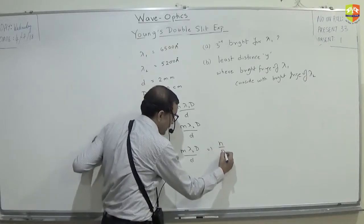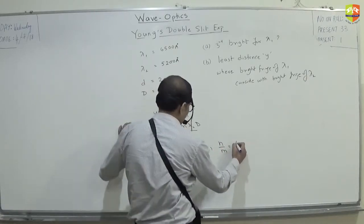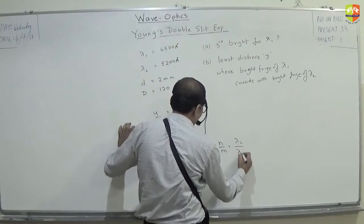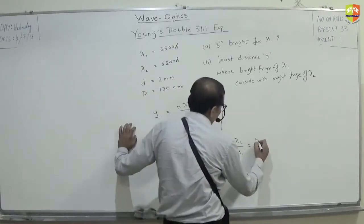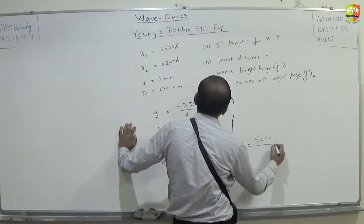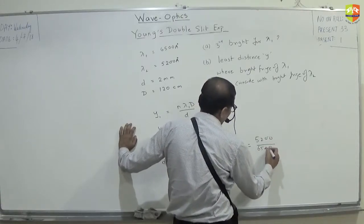So, I can say n by m is lambda 2 by lambda 1. What is lambda 2? 5200. Lambda 1? 6500 Armstrong.